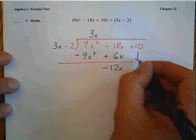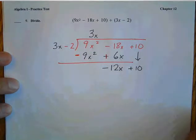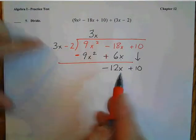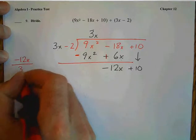Now we add up our terms. We get 0x squared and negative 12x. I bring down the 10 and we start over again. How many times does 3x go into negative 12x?